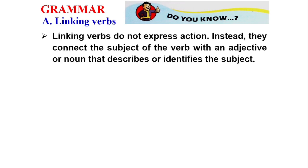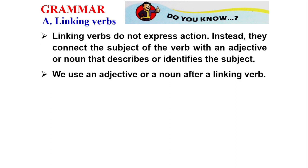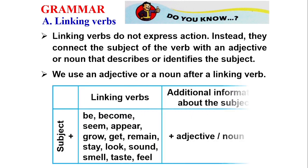Linking verbs do not express action. Instead, they connect the subject of the verb with an adjective or noun that describes or identifies the subject. We use an adjective or noun after a linking verb. Linking verbs are used to describe and modify the subject that comes before them. After a linking verb comes an adjective or a noun.